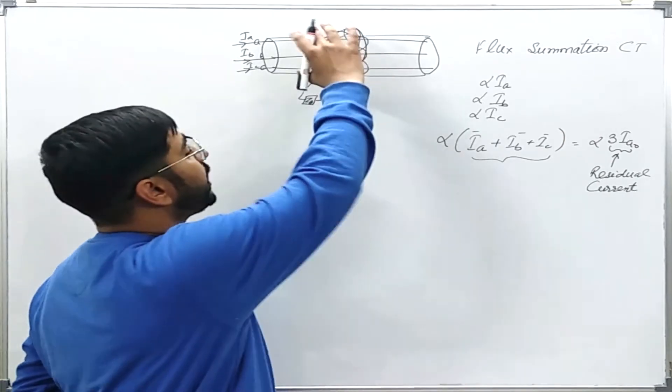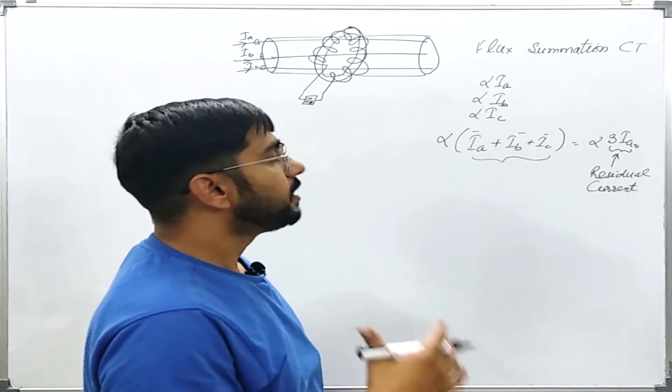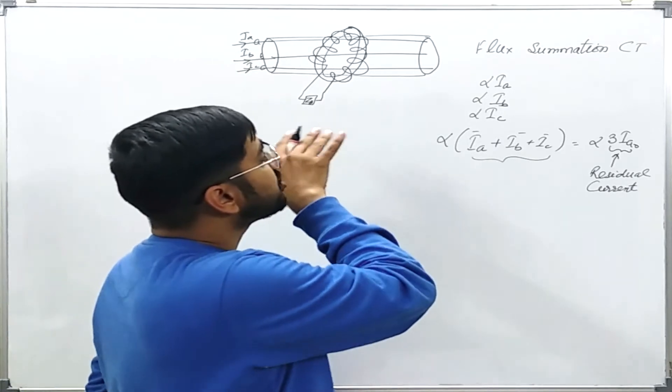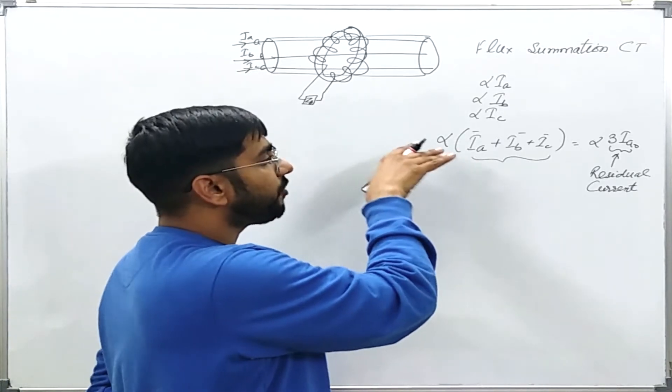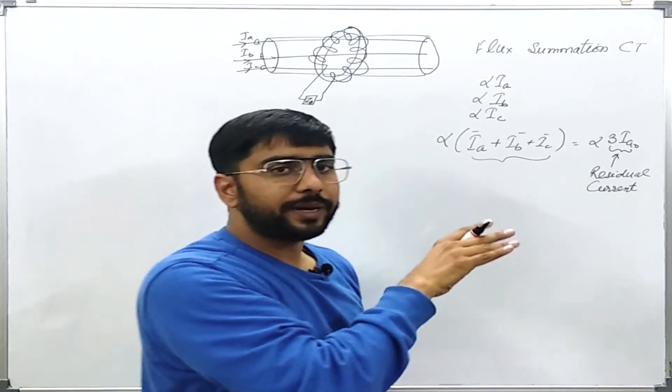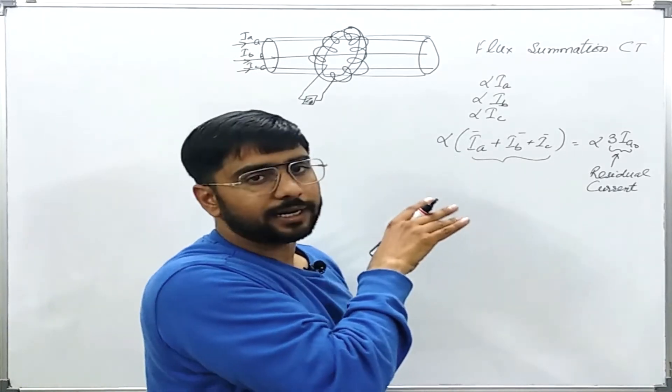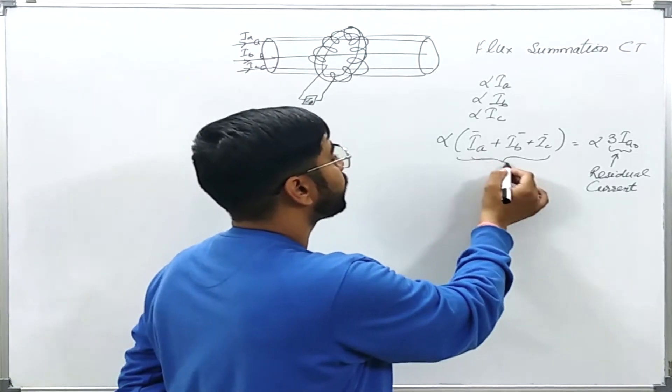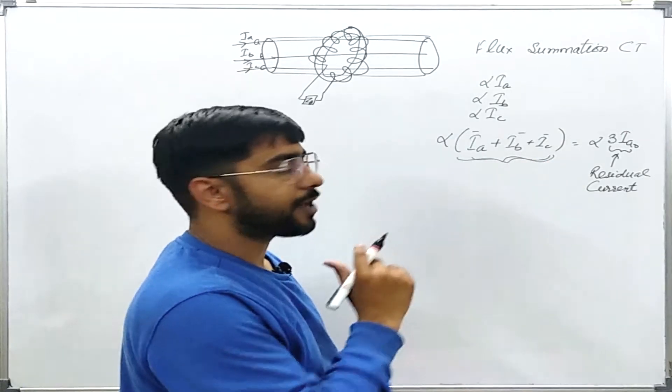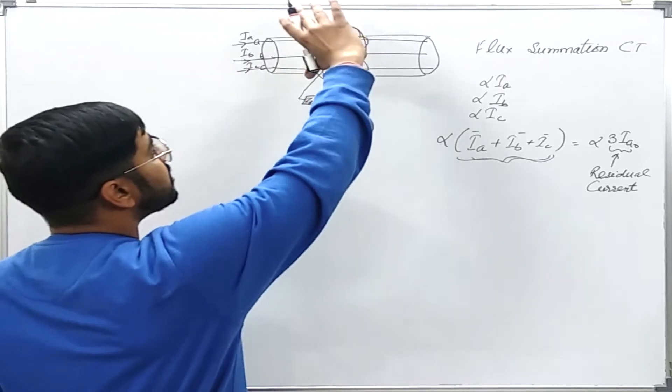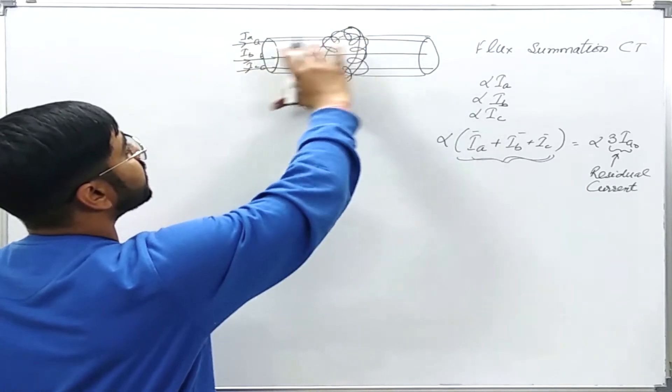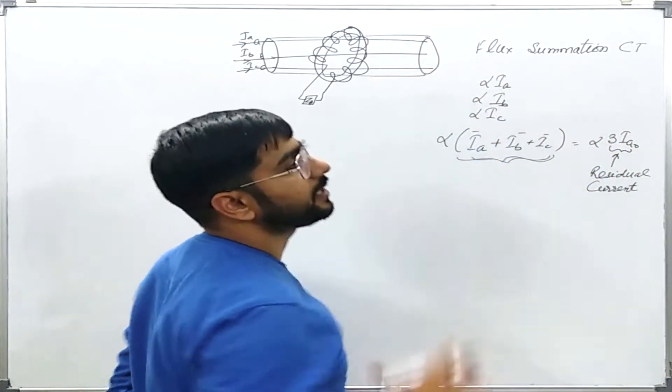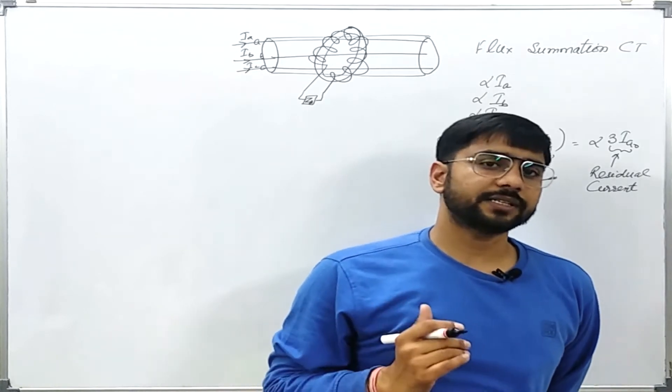You see that the flux in the CT core is proportional to the residual current or the residual flux. The CT is doing, it is summing the flux in the form of phasor. However, I am not assuming any kind of saturation. I am assuming that I can represent the fluxes in sinusoidal form or in the phasor form. This CT is summing all the fluxes created by all the phases and giving me the relative which is proportional to the sum of all the fluxes. That's why it is called flux summation CT.